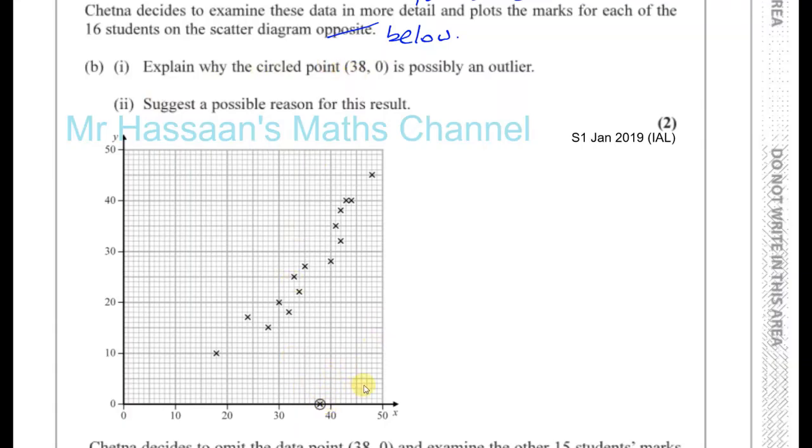Explain why the circled point 38.0 is a possible outlier. Well, that's because you can say it's far away from the data, or you could say it does not lie close to the line of best fit. The line of best fit would be over here somewhere. And it doesn't lie close to the line of best fit. It's far away from the rest of the body of the data.